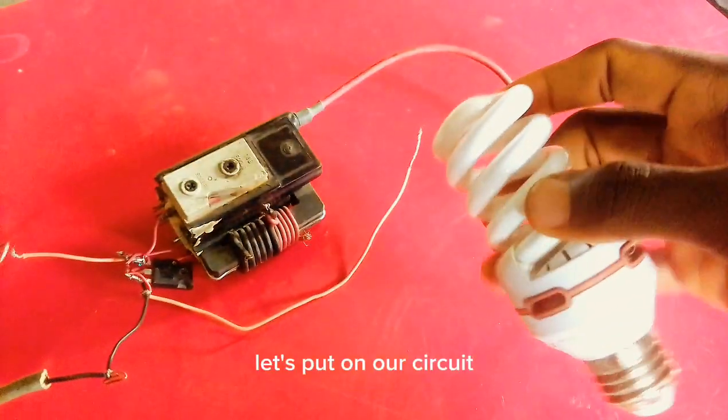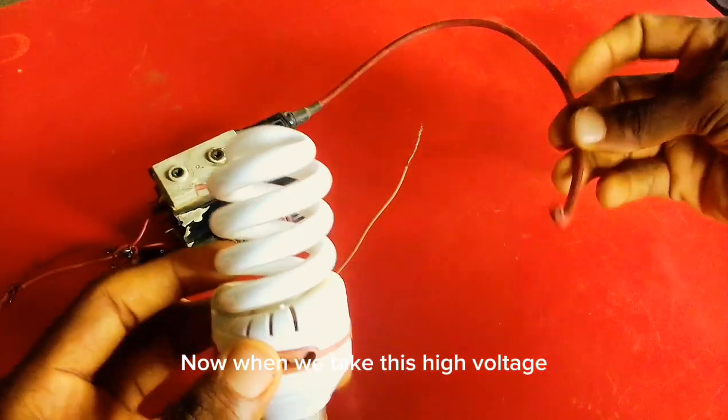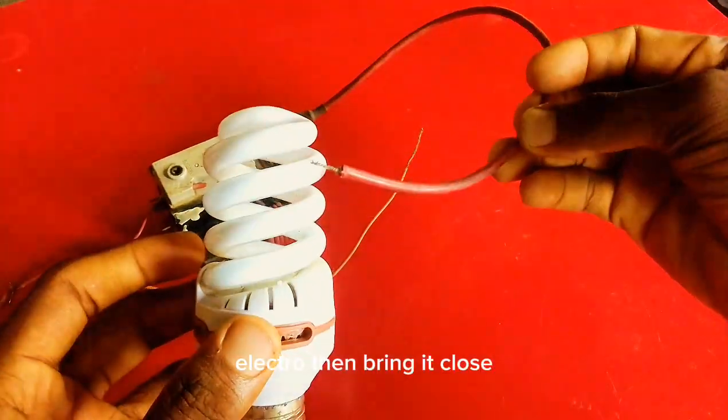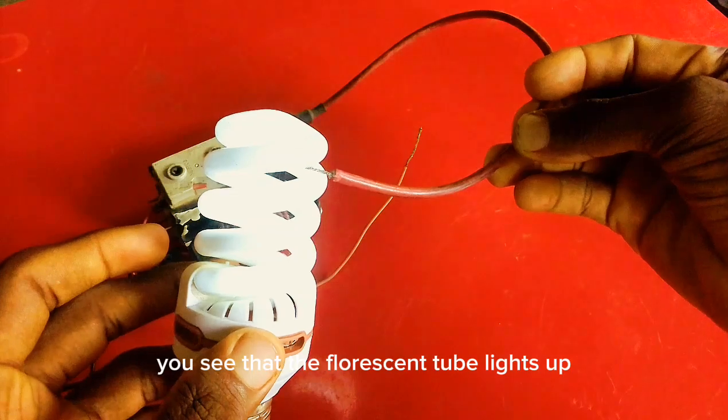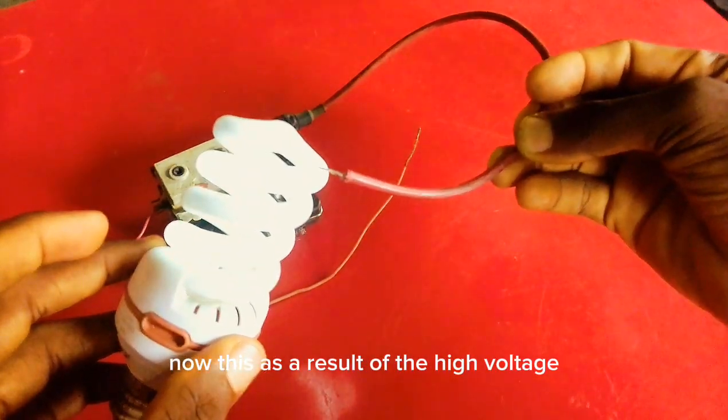So let's put on our circuit. Now when we take this high voltage electrode and bring it close, you see that the fluorescent tube lights up.